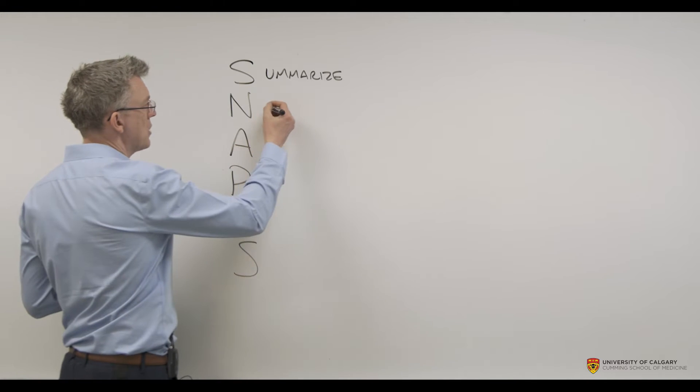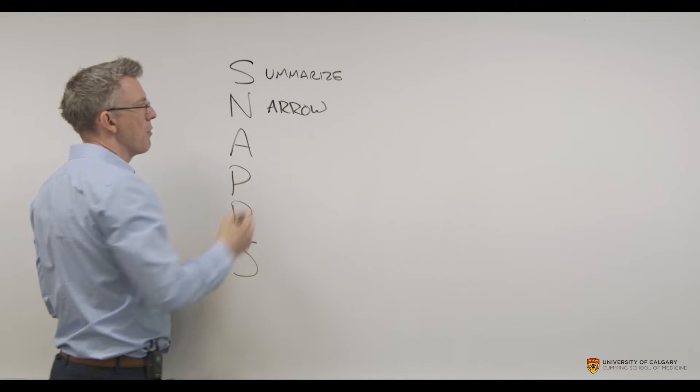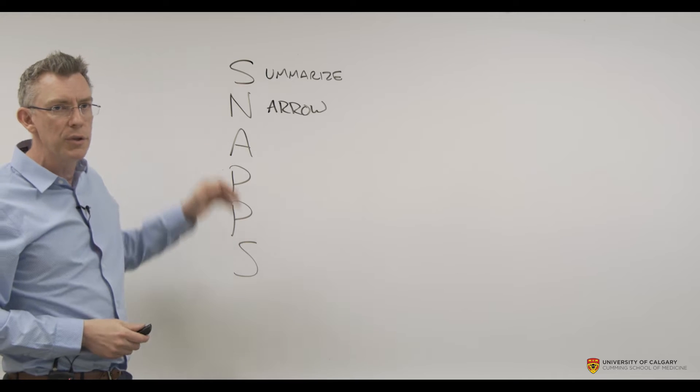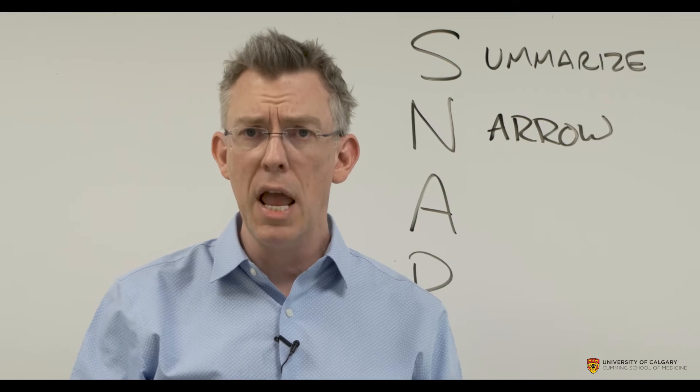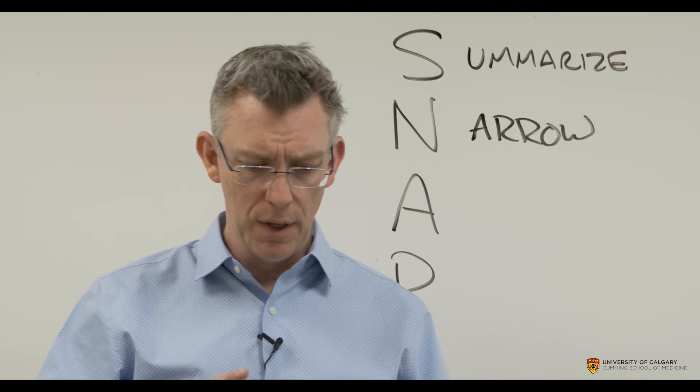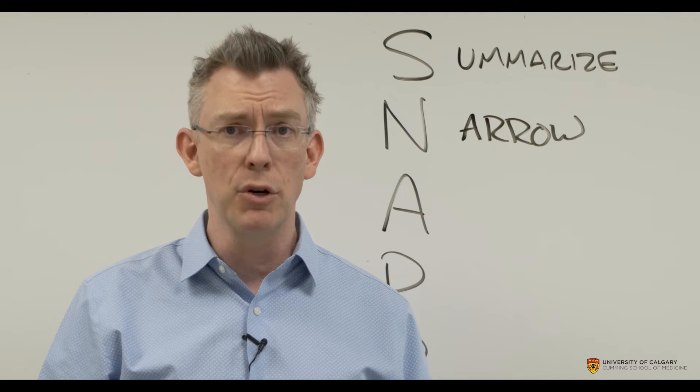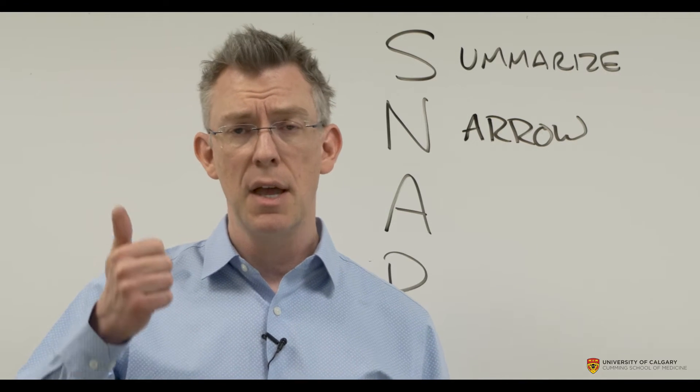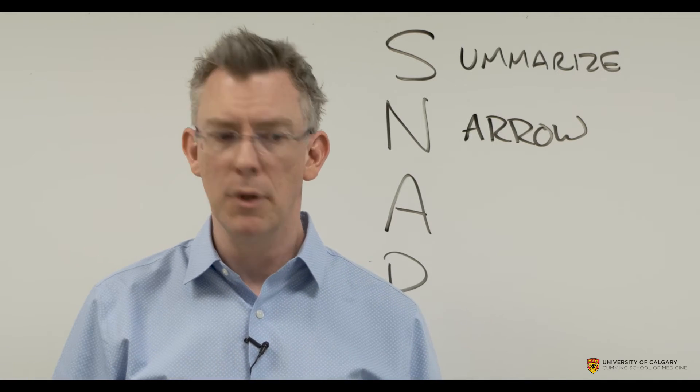Next, you narrow the differential, which you've kind of already done with the summarizing. And it's actually okay and kind of easy to flow the two together. But you narrow the differential and you say, based upon her age, her symptoms, her physical findings, I think that there are two main diagnoses that we've got to be worried about here. Appendicitis and ectopic pregnancy.